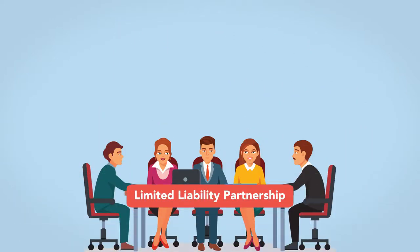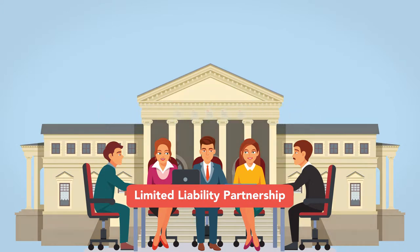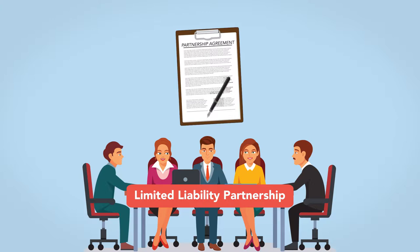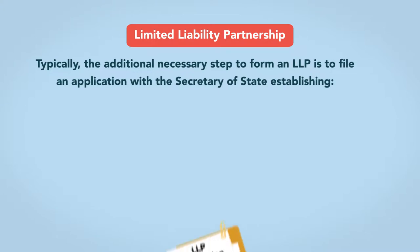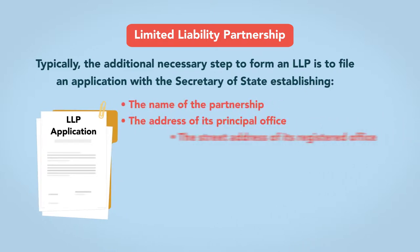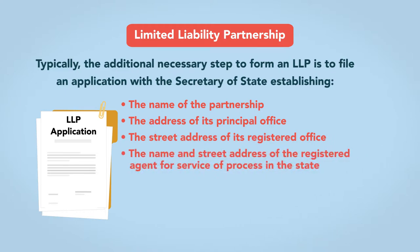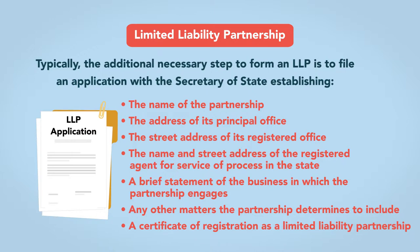At its core, a limited liability partnership is a combination of a general partnership and a limited partnership. The government continues to tax partners on a pass-through level and entrepreneurial professionals seeking to form one will draft a partnership agreement. However, unlike the limited partnership, the LLP allows limited partners to actively participate in the business without the risk of becoming personally liable for partnership obligations or another partner's liabilities. The additional necessary step to form an LLP is to file with the Secretary of State an application establishing the name of the partnership, the address of its principal office, the street address of its registered office, the name and street address of the registered agent for service of process, a brief statement of the business in which the partnership engages, any other matters the partnership determines to include, and a certificate of registration as a limited liability partnership.